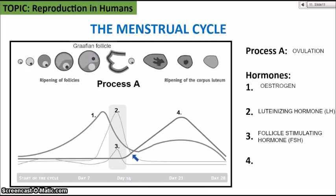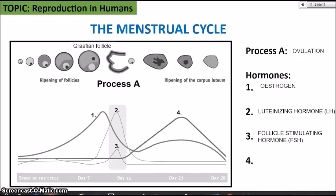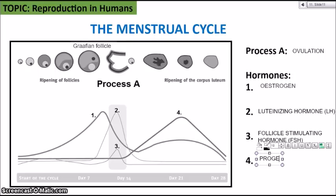The final hormone is progesterone, whose levels only increase after ovulation — after day 14. That increase maintains the thickness of the uterus lining. Progesterone comes from the corpus luteum and helps maintain the thickness of the uterus lining in preparation for pregnancy. Those are the four hormones responsible for regulating the menstrual cycle.